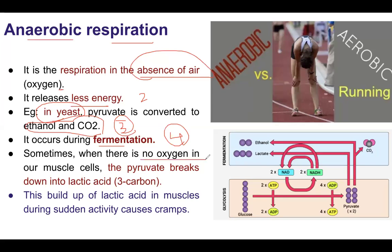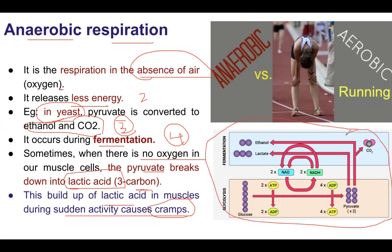Anaerobic respiration also sometimes happens in our own body — for example when an athlete is running very fast. In this case, pyruvate breakdown produces lactic acid, which is a three-carbon compound. When lactic acid builds up in the muscles, it causes cramps. Looking at the diagram: glucose undergoes glycolysis — going from a 6-carbon molecule — to pyruvate, a 3-carbon molecule.